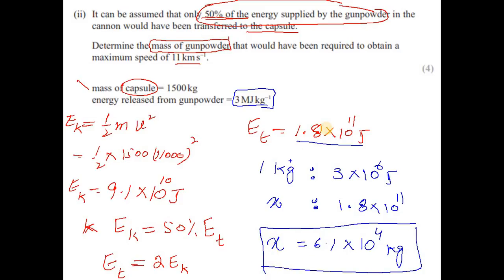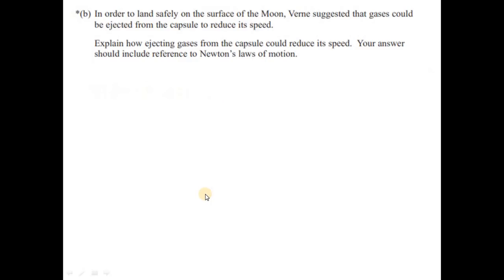In order to land safely on the surface of the moon, it was suggested that gases could be ejected from the capsule to reduce its speed. Question 2.8: explain how ejecting gases from the capsule could reduce its speed. Your answer should include reference to Newton's laws of motion. This is a typical question.